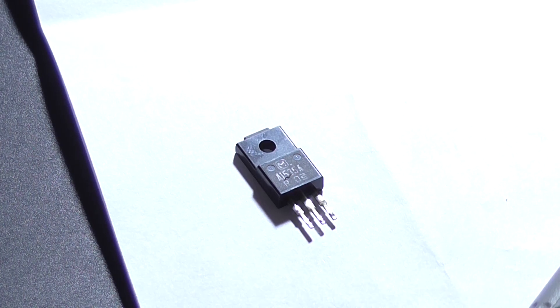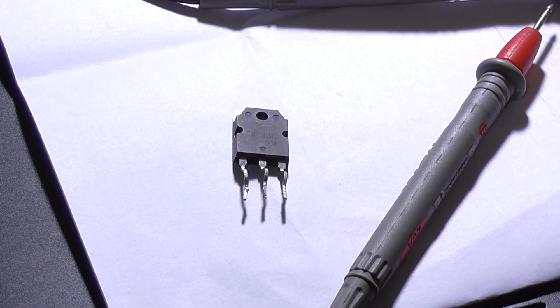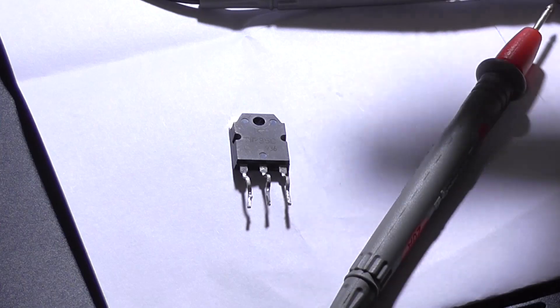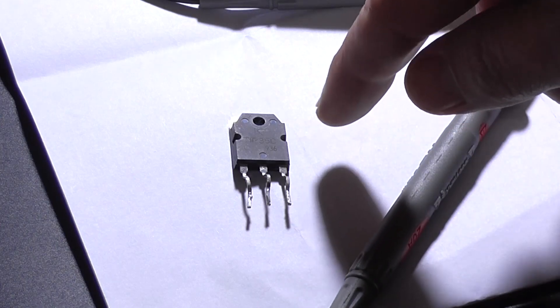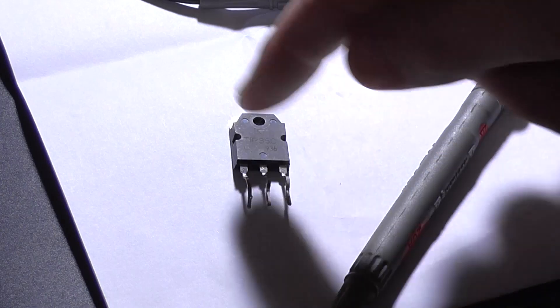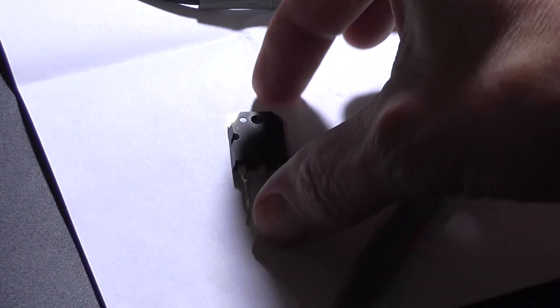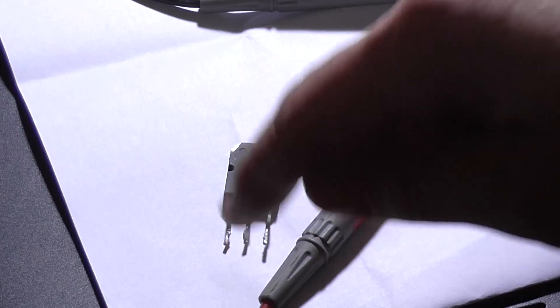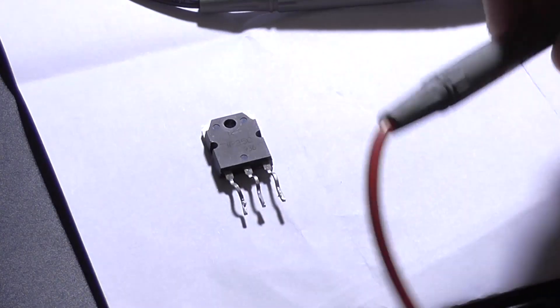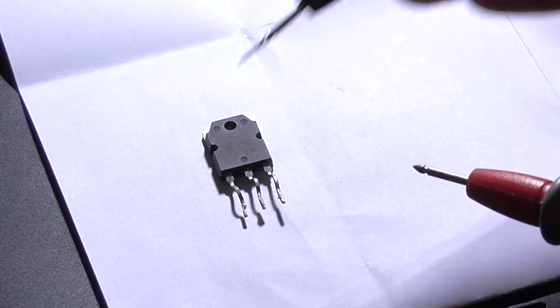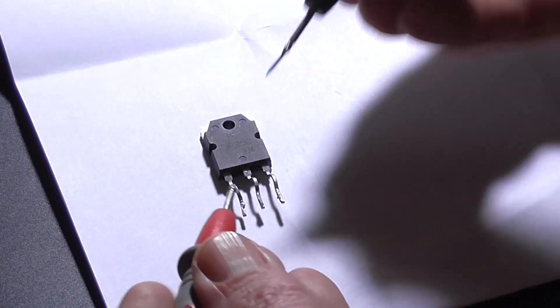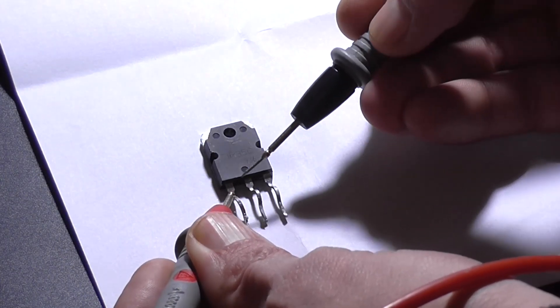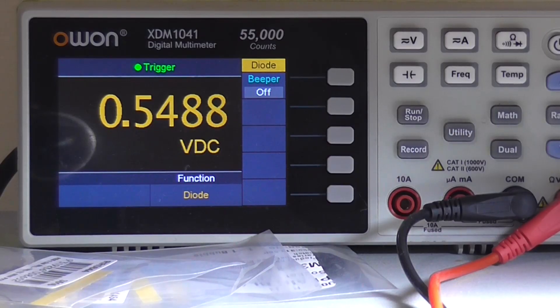Now let's look at a good working transistor. And this is a known working transistor. Looking at the standard TO3P package, that's what they look like. Now it's still base, collector, emitter. It's just in this case we put the positive lead on the base and a negative on the collector and emitter respectively. So let's start testing this one. Positive on the base, on the collector. That's a good junction. Move over to the emitter. That is also a good junction.